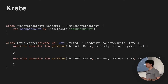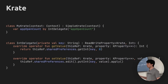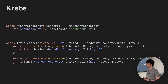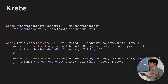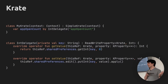Let's implement these using shared preferences. We can use the thisRef parameter, which is the crate, and grab the shared preferences of that — that's the only property defined on the Crate interface. Inside getValue, we're using getInt to get the int associated with the key. And in setValue, we're starting an edit, putting in the value with the key, and then applying our changes, which is fairly straightforward.